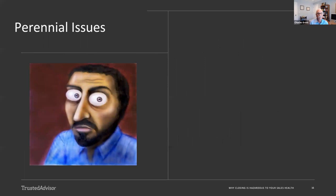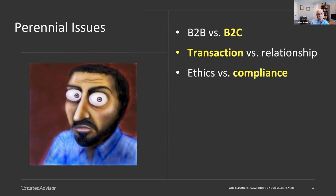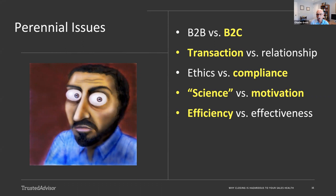So that brief look at history, there are some perennial issues that keep showing up. One of them is this shift from B2C to B2B, that's business to consumer versus business to business. Another perennial issue is this theme of transactions versus relationships. We see that popping up over and over. Ethics versus compliance, do you behave ethically or must you be stopped from behaving unethically. Science versus motivation, a common theme. Efficiency versus effectiveness. And these issues bedevil us still today.